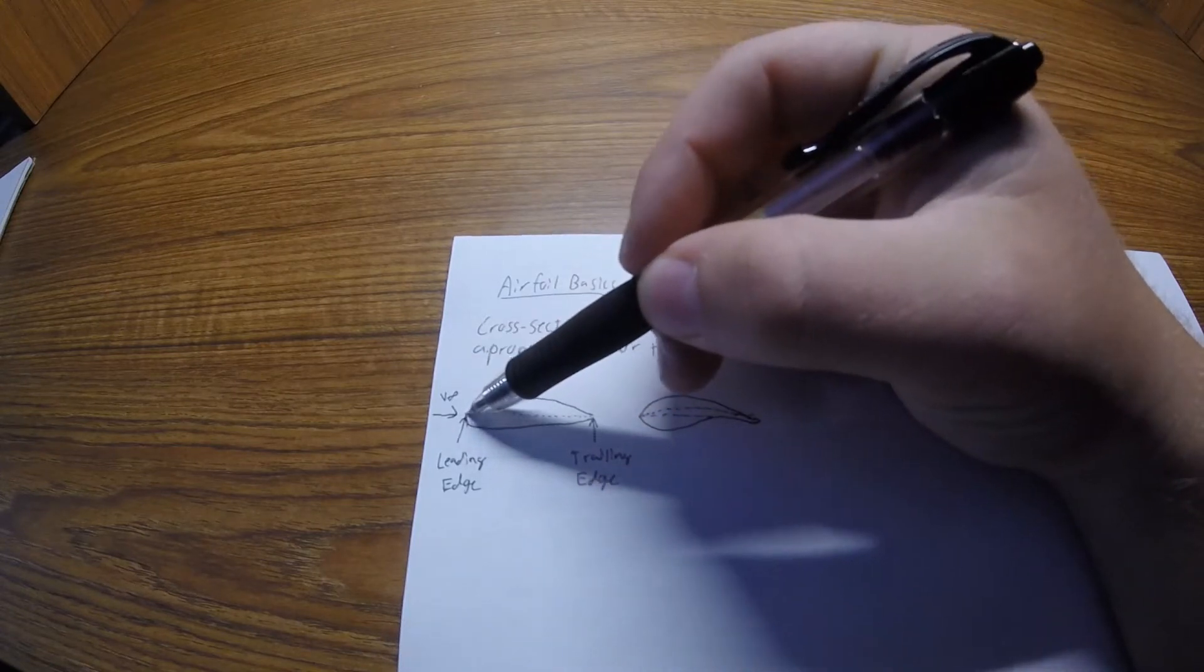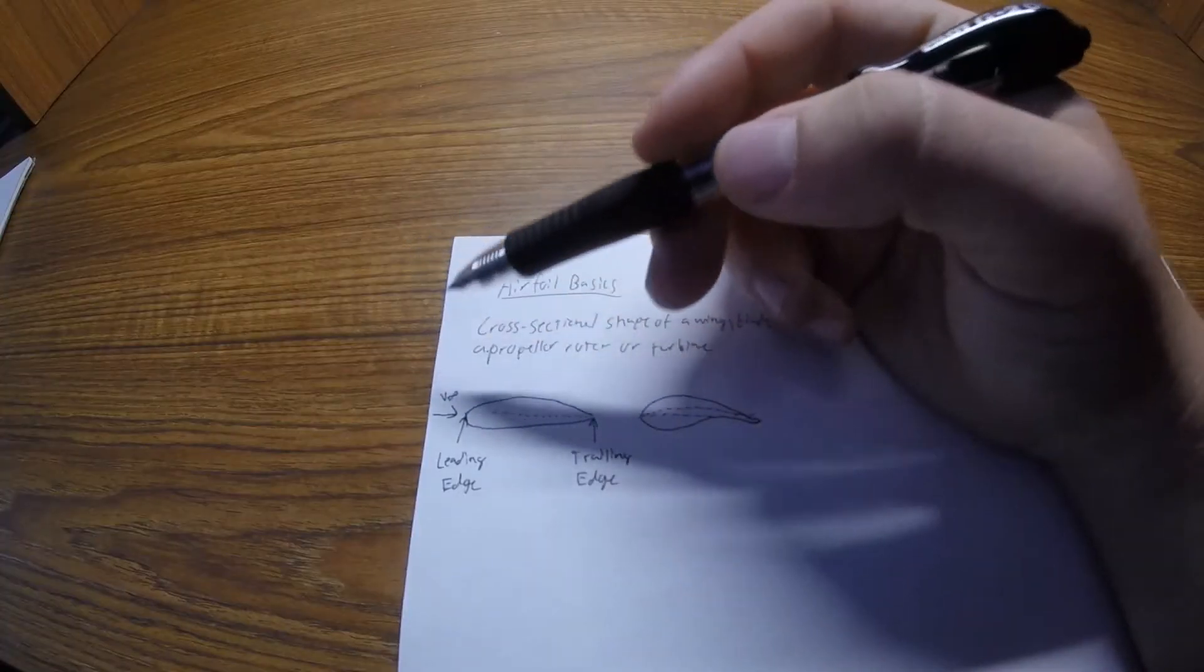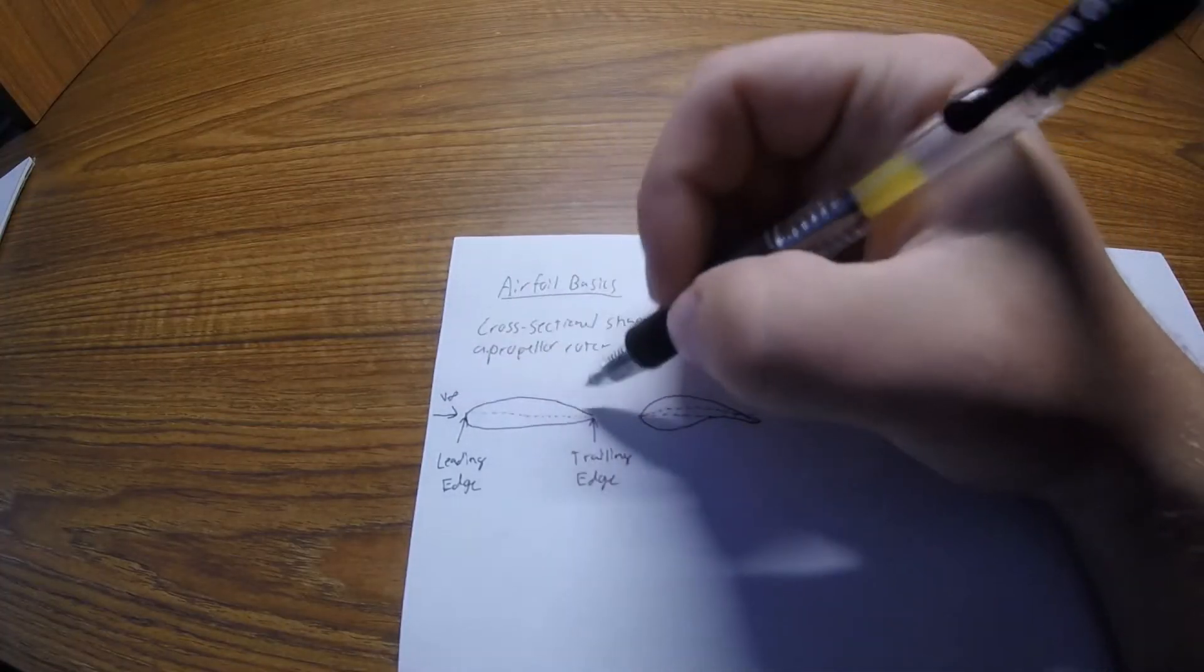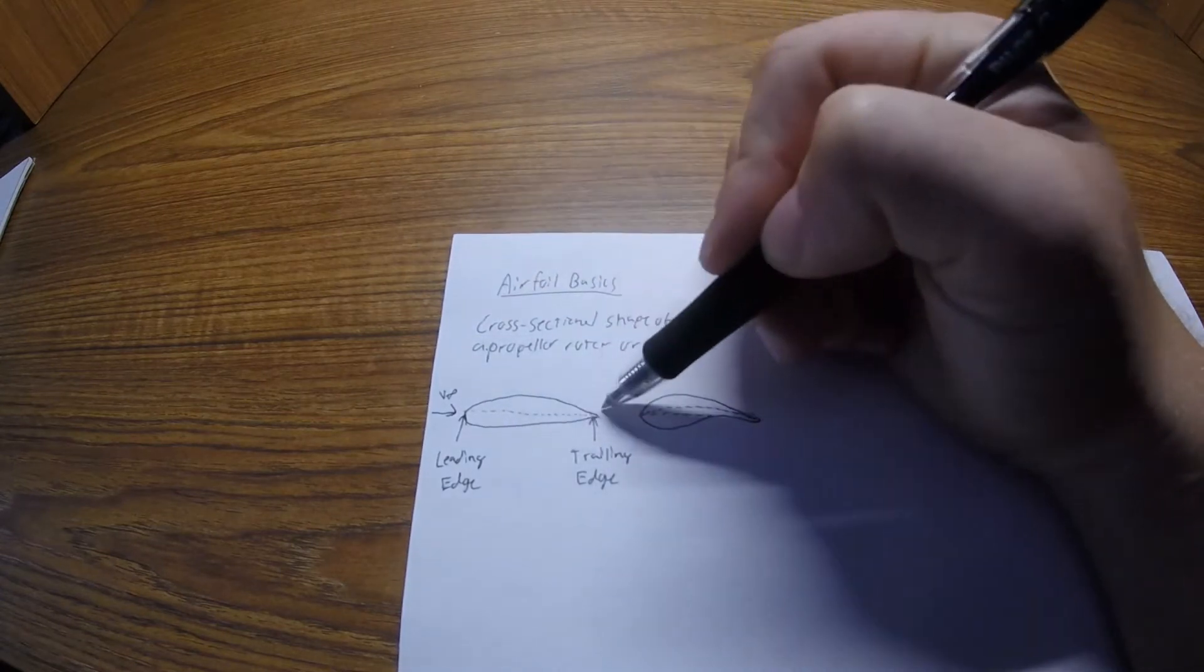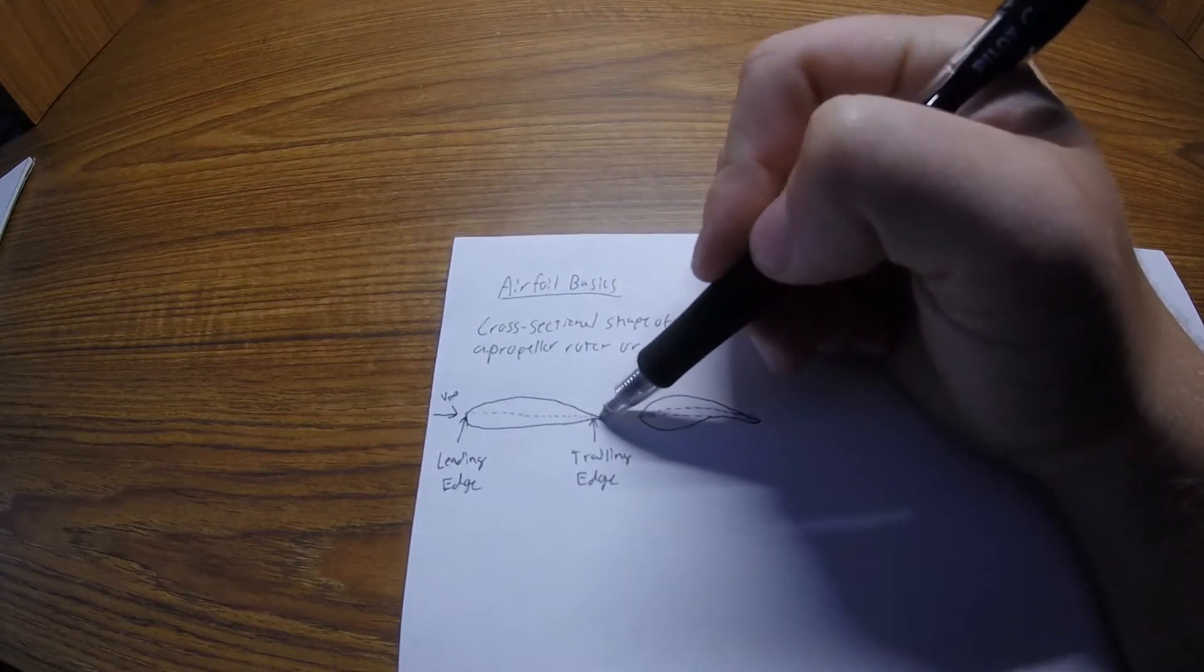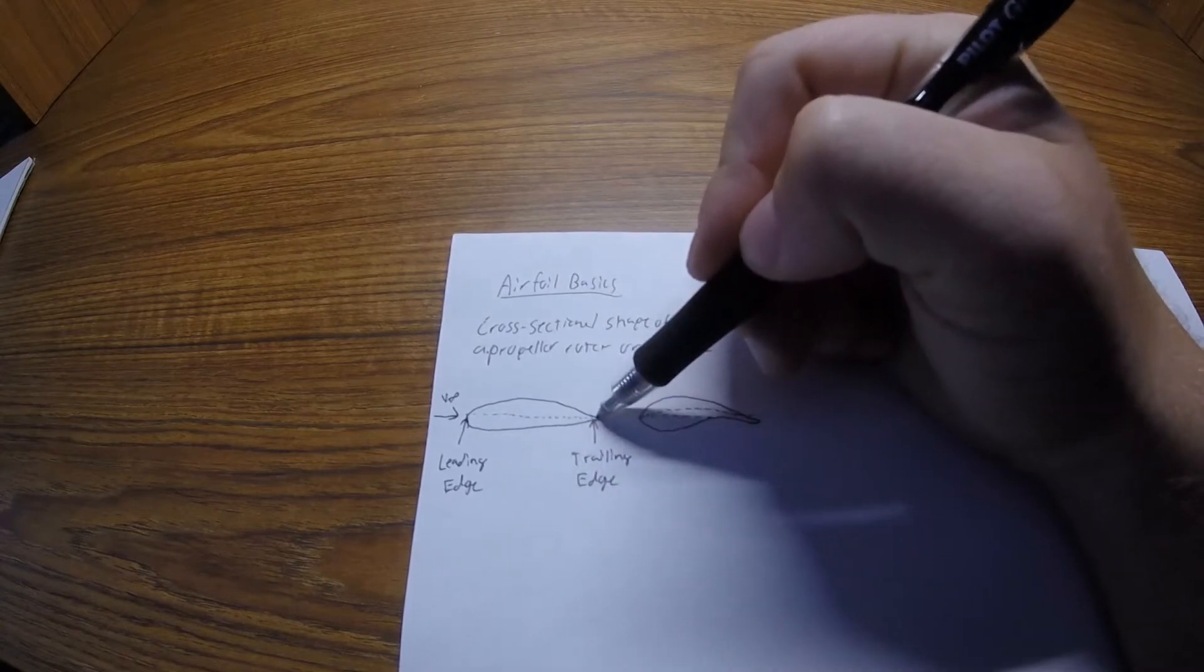Now some higher performance aircraft will get thinner and thinner, but for most it's very rounded compared to the trailing edge, which is almost always kind of a point, a sharper point. So the trailing edge is the back of the airfoil.